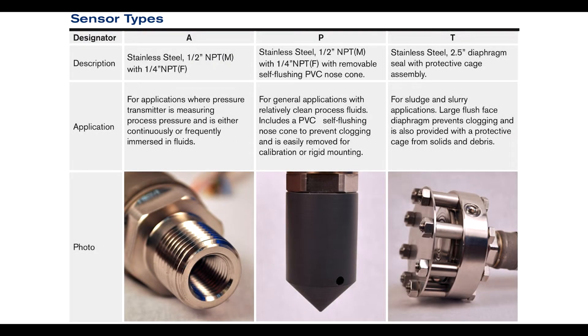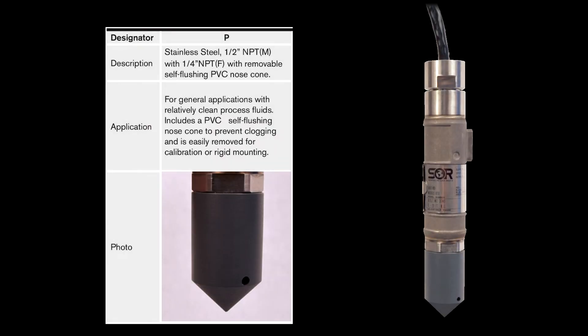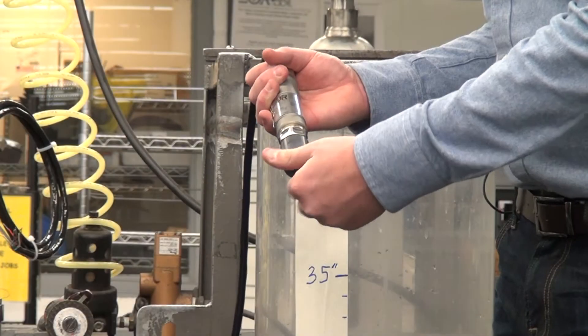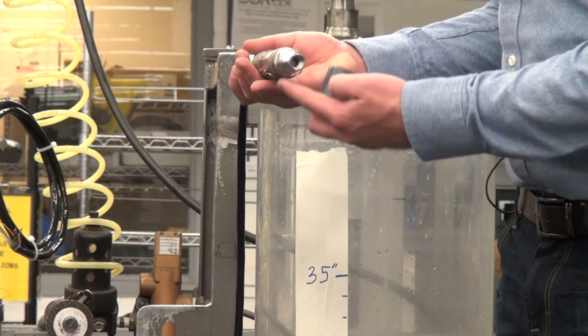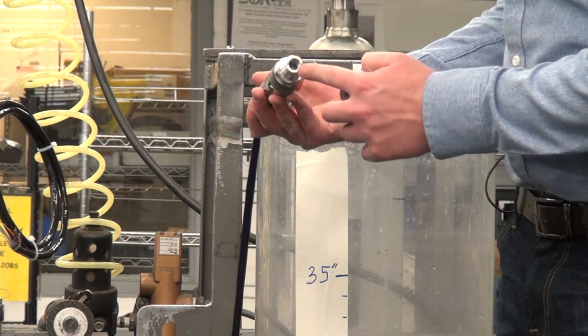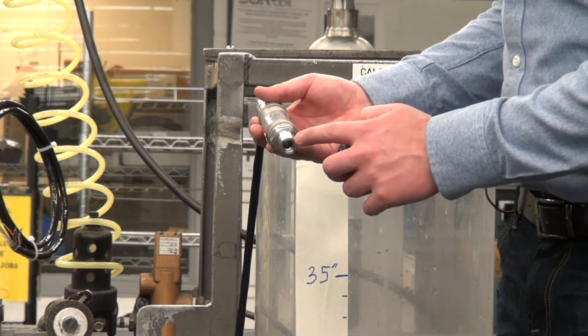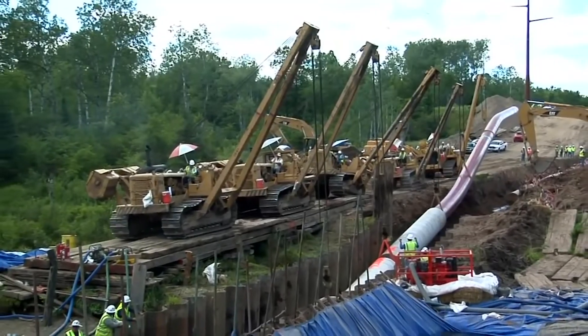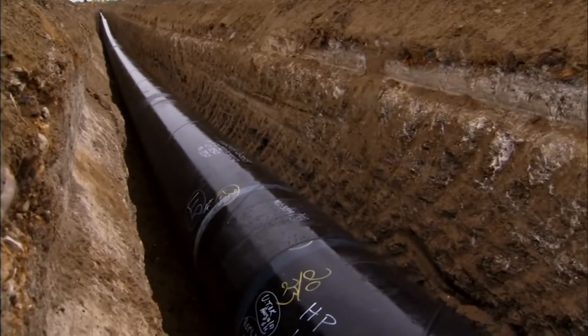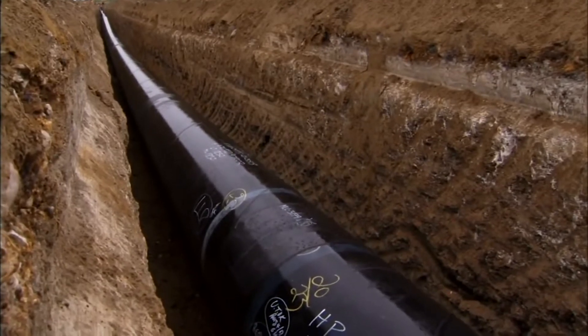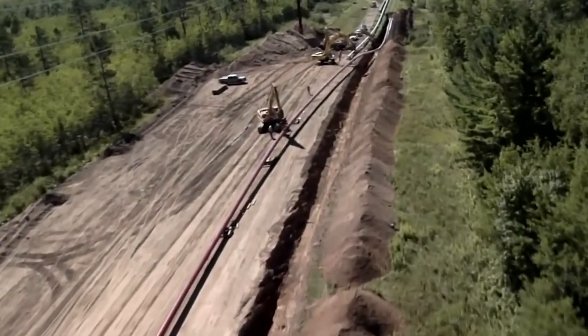There are three main types of process connections for the 815LT. For our standard process connection, we have our standard PVC nose cone option that is actually removable. Underneath the nose cone, we have a 1.5 inch MPT male connection as well as a 1.25 inch female MPT connection for mounting it directly to a pipeline. This is useful for measuring a pipeline that is continuously submerged to be able to monitor the pressure accurately.